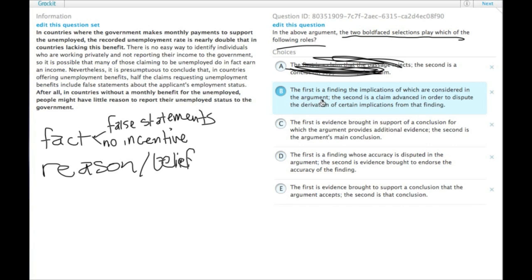The second is a claim advanced in order to dispute the derivation of certain implications from that finding. Wow. So, yes, that sounds good, but let's check the other ones. The first is evidence brought in support of a conclusion for which the argument provides additional evidence. That's not what happens. The first is a finding whose accuracy is disputed. That's not what happens. The first is evidence brought to support a conclusion that the argument accepts. The second is that conclusion.